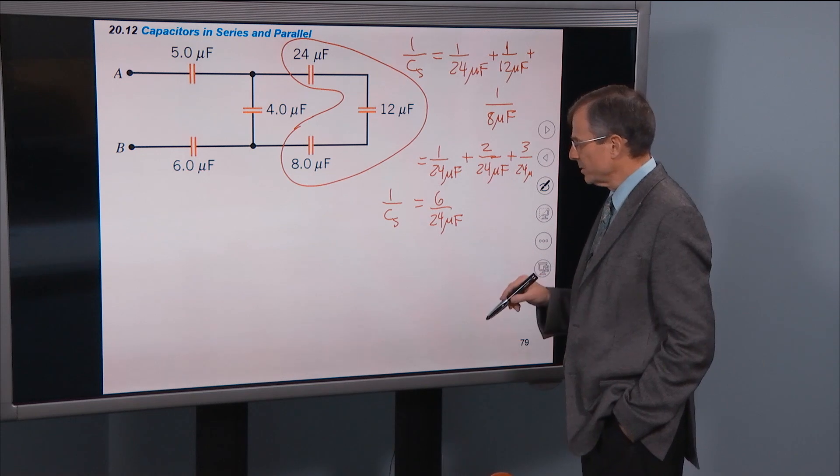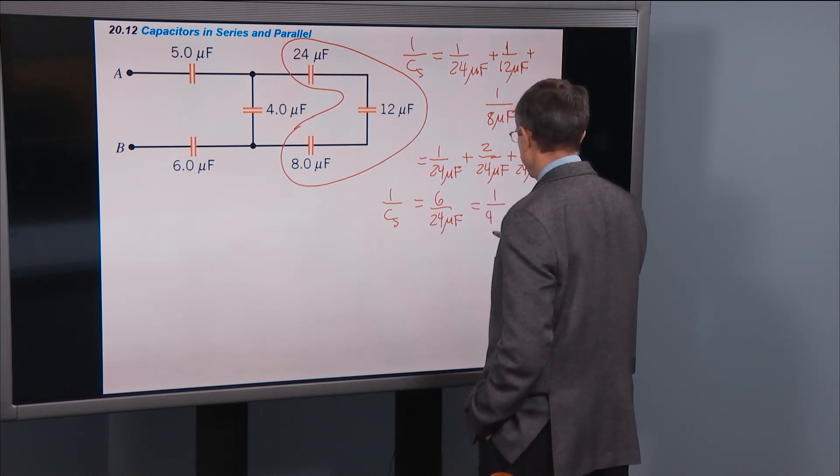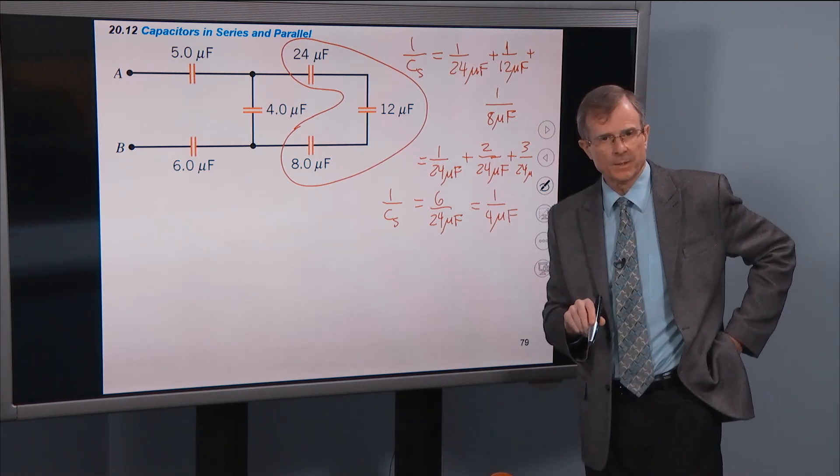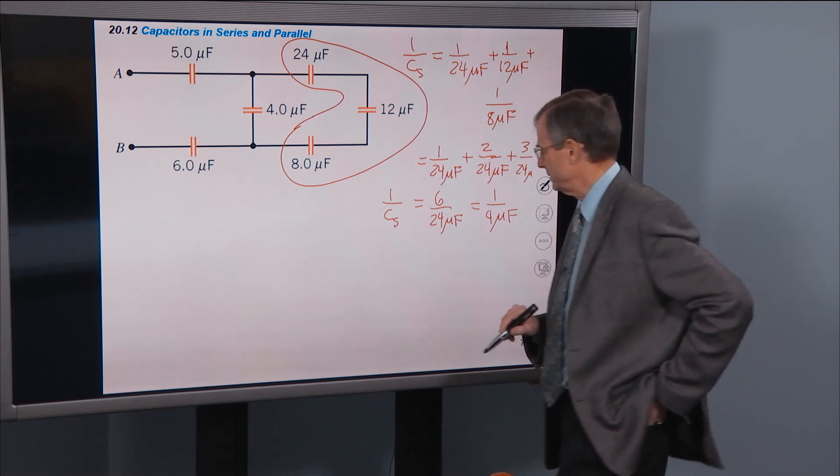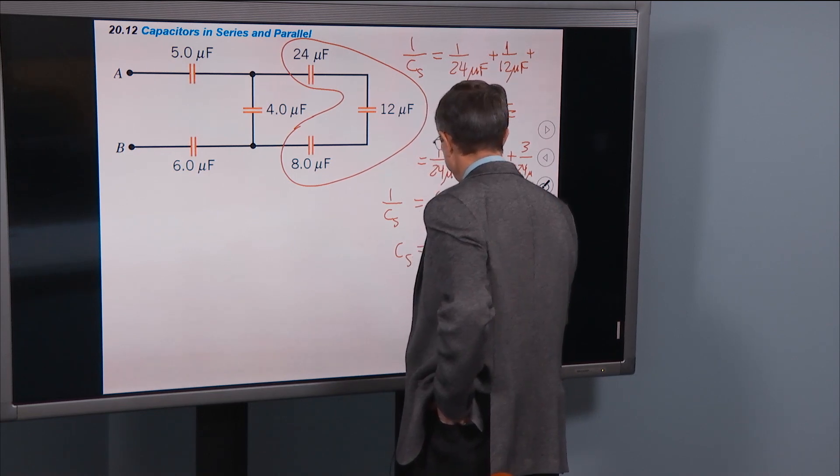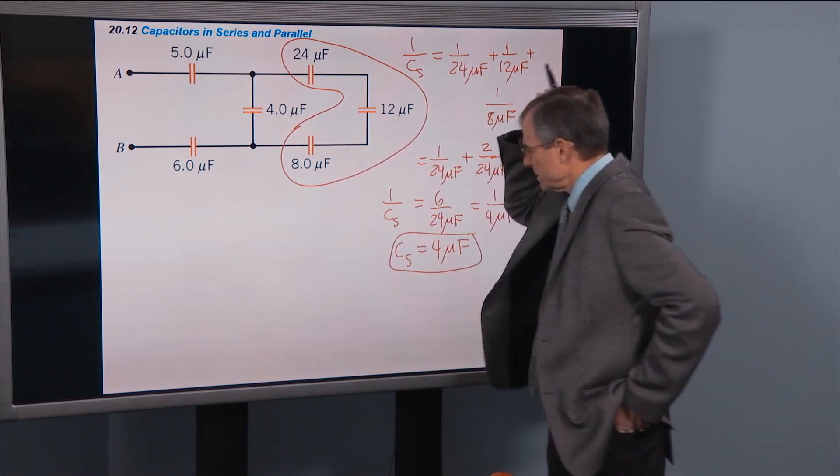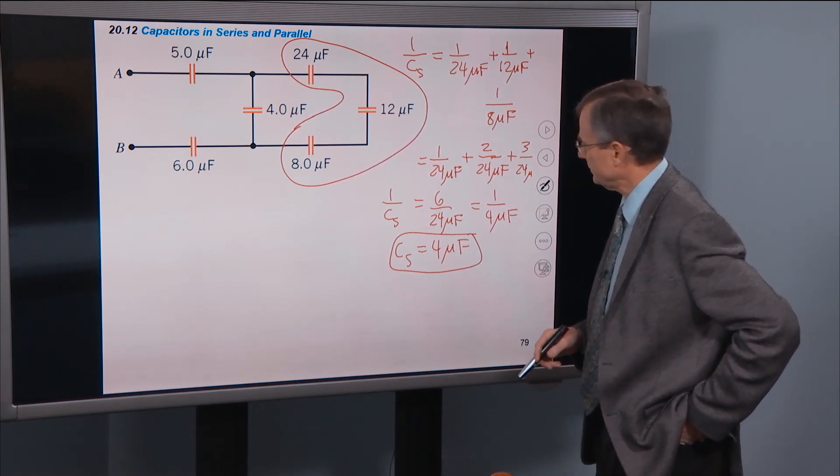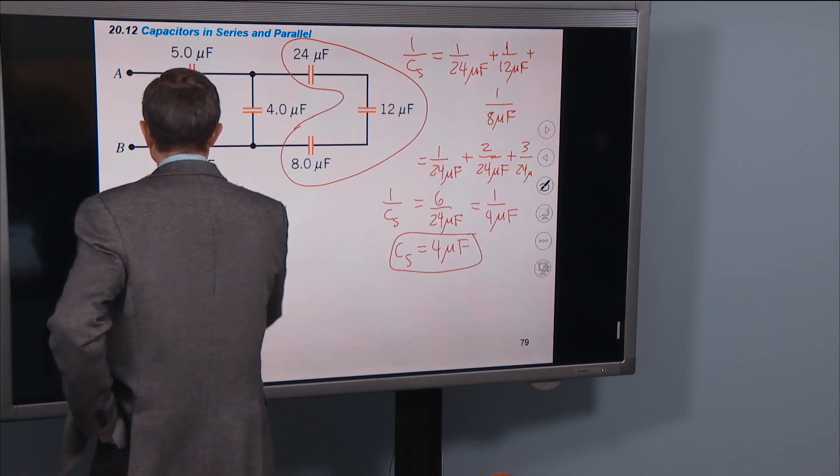Well 6 over 24 is our old friend 1 fourth. So the equivalent capacitance is 1 fourth of a microfarad, right? And you say no, it isn't. It's 1 over that.